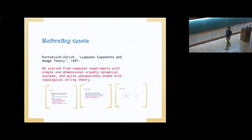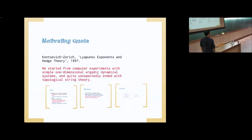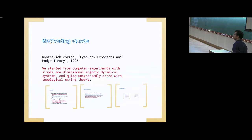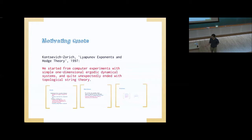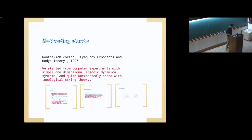We have this motivating quote, which sounds very fancy. I remember getting this paper from my advisor to read when I was in graduate school — this paper with the amazing title 'Lyapunov Exponents and Hodge Theory.' The paper terrified me. But now I go back and it's actually a really incredible and beautiful paper from 1997. It has this amazing sentence at the beginning: 'We started from computer experiments with simple one-dimensional ergodic dynamical systems and quite unexpectedly ended with topological string theory.' My goal is — I know what simple one-dimensional ergodic dynamical systems are. I don't really know what topological string theory is, but maybe cross that out and say moduli spaces of geometric structures. As far as I can tell, that's kind of what they meant.